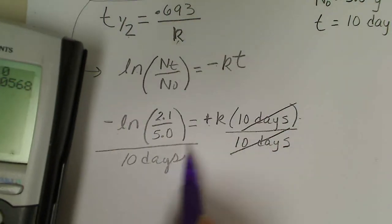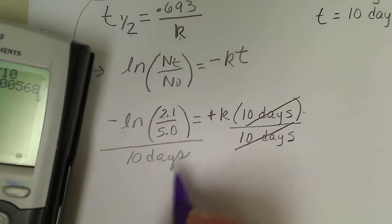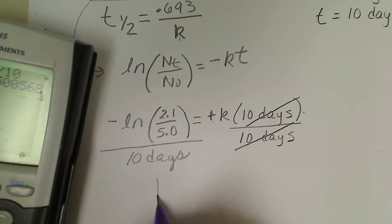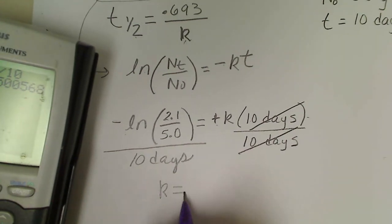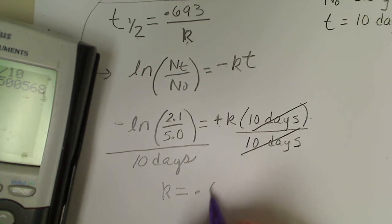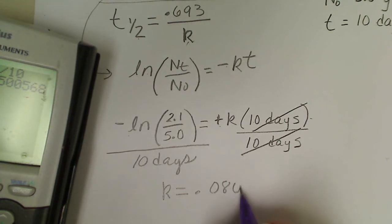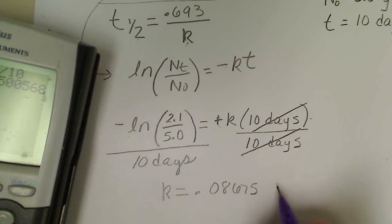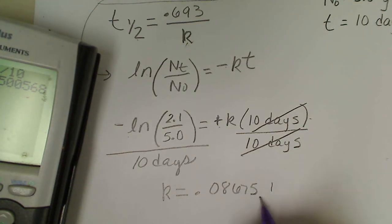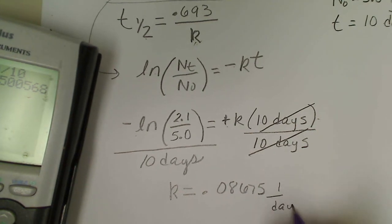When I do that I get this number, which would be reciprocal days because our denominator is days. I'm going to write k equals 0.08675 reciprocal day.